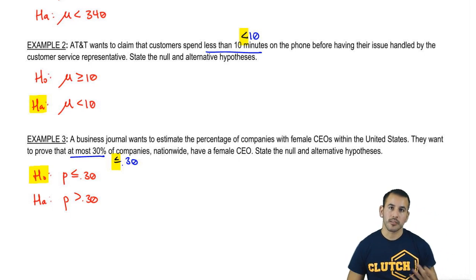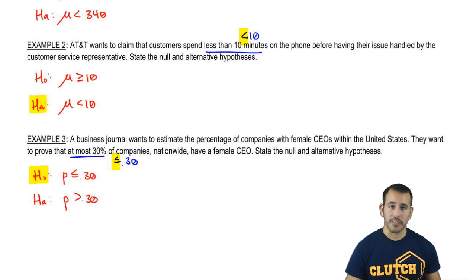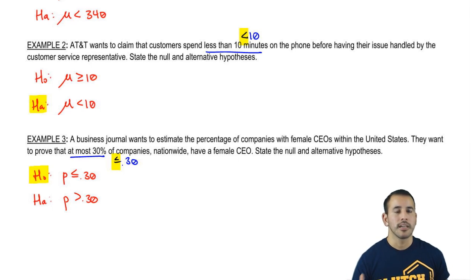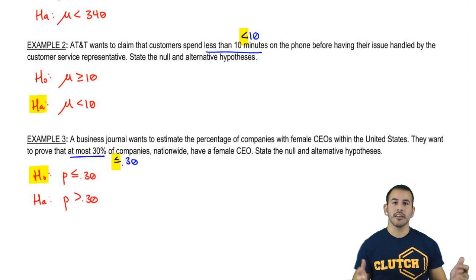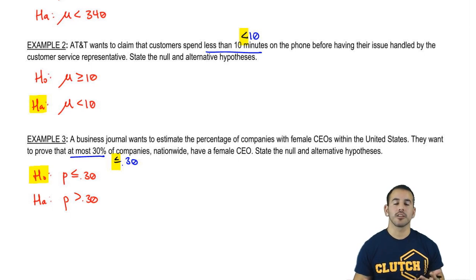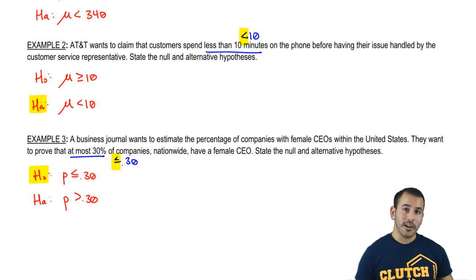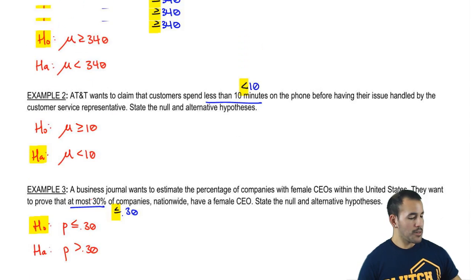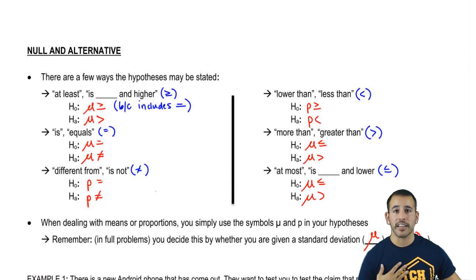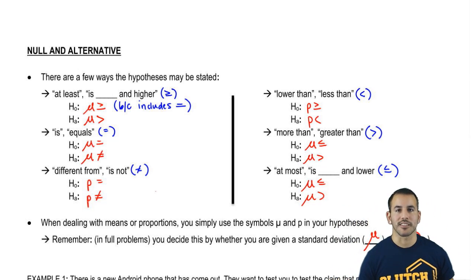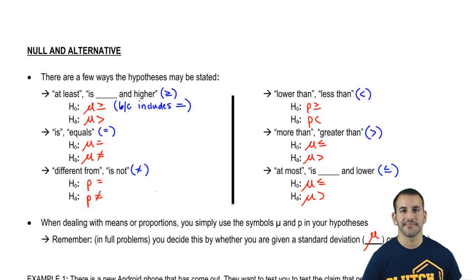One note: there are also some situations where people will just say the null is always equal to. The alternate is the one that's going to be less than, greater than, or not equal to. Moral of the story is that the alternate is the one that doesn't have the equal sign. Some professors will say in general the null is always equal to and the alternate is the one that changes — but I'm doing the situation where the null and alternate also vary. So now we're going to use this information to go ahead and get rejection regions — those are based on where's my cutoff to reject the null hypothesis. We'll figure that out in our next video.